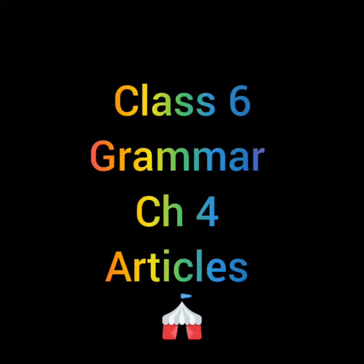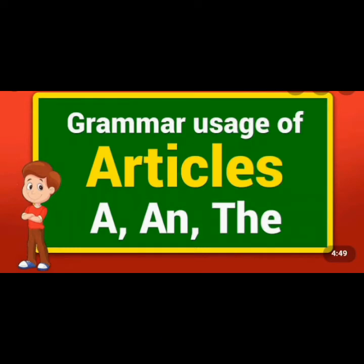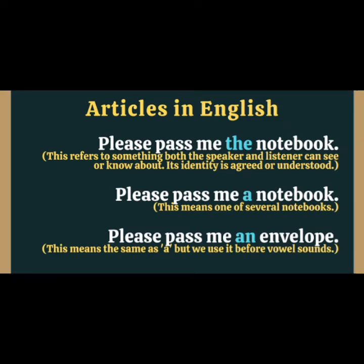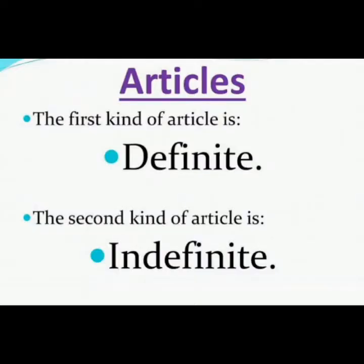Hello and welcome back to Maps Online Classes. Class 6 Grammar, Chapter 4 – Articles. A, an, and the are called articles. An article is a word that comes before a noun. Look at the examples: the boy, a bee, an apple. Please pass me the notebook. Please pass me a notebook. Please pass me an envelope.